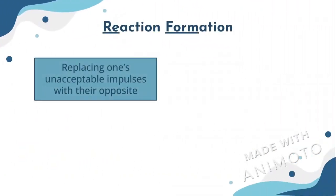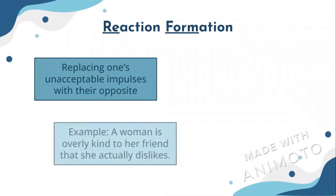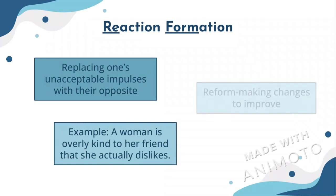Reaction formation is replacing one's unacceptable impulses with their opposite. For example, a woman is overly kind to someone that she actually dislikes. One way to remember reaction formation: the beginning of the word 'reaction' and the beginning of the word 'formation' create the word 'reform,' which means making changes to improve something. This is similar to reaction formation in that a person changes their unacceptable behavior into another behavior in order to improve.